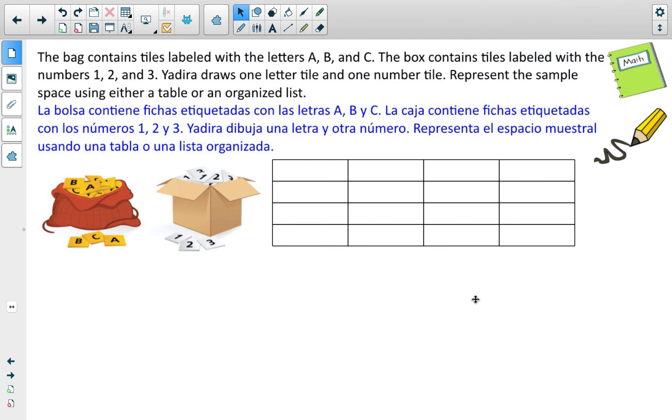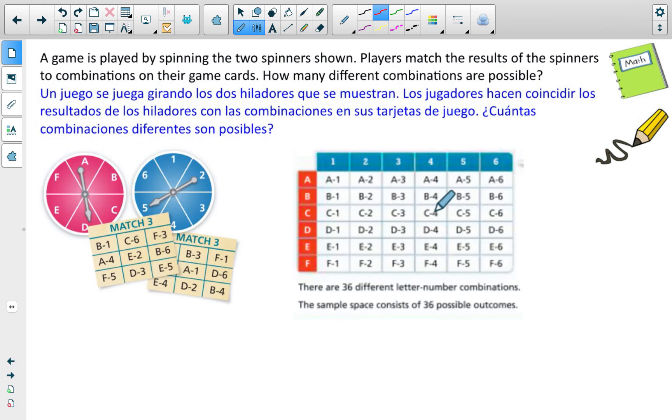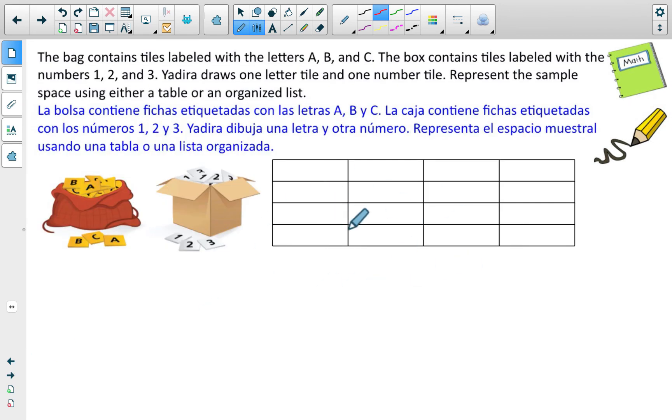I have two more examples lined up for you guys. And what I'm going to actually ask you to do is write these down and solve them and then use the video just to check your work. The way you guys are going to really learn this is by practicing. And I say that often. We can read it together, though. The bag contains tiles labeled with the letters A, B, and C. And the box contains tiles labeled with the numbers 1, 2, and 3. Yadira draws one letter tile and one number tile. Represent the sample space using either a table or an organized list. When you are done with that, please check the video.